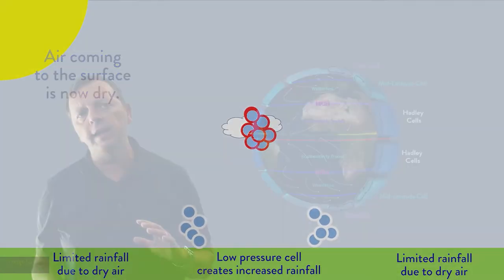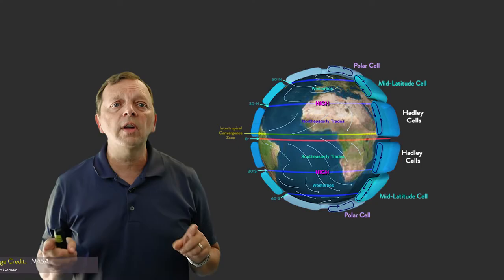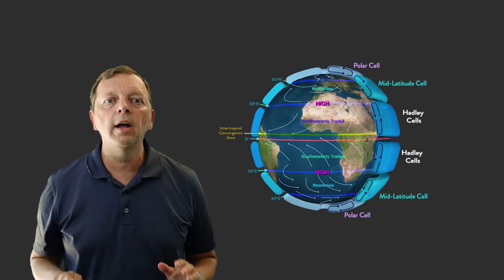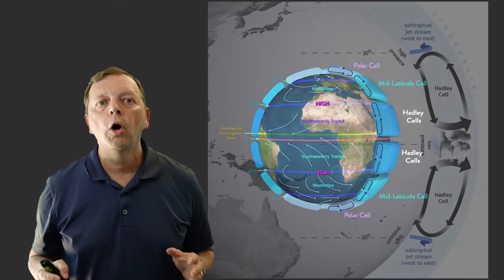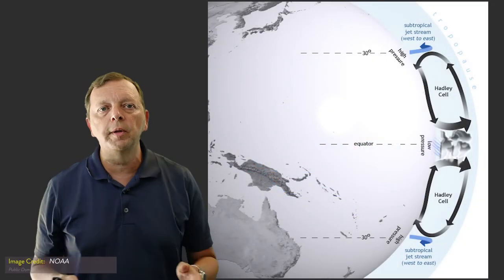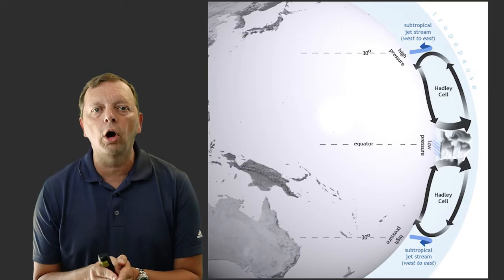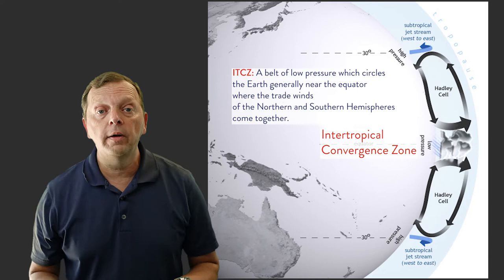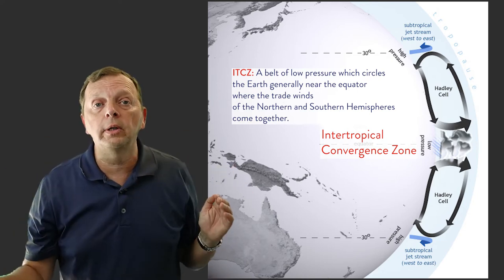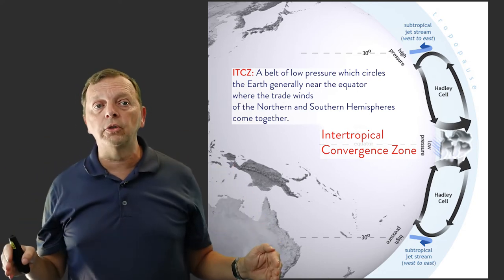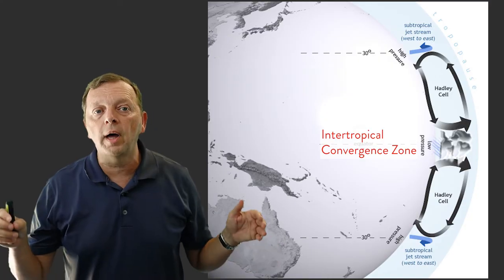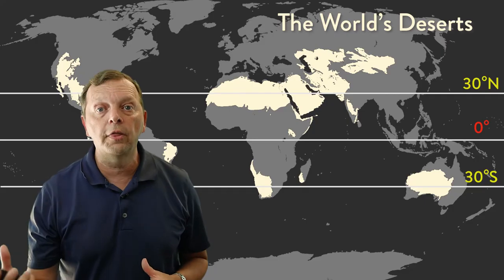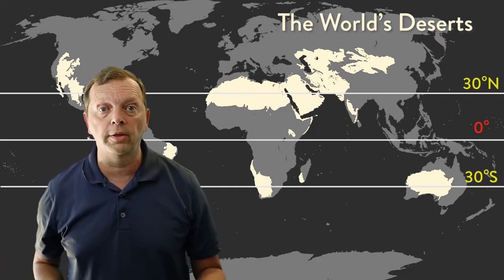Because of the uneven heating of the earth's surface, there are several large convection cells that create large global wind patterns. Probably the most important are the Hadley cells, which stretch from the low pressure area near the equator called the Intertropical Convergence Zone, or you can just call it the ITCZ for short. Where the air of the Hadley cell comes down is around 30 degrees north and 30 degrees south latitude. This constant dry air from the Hadley cells is the reason why so many of the world's deserts are found along 30 degrees north or 30 degrees south latitude.